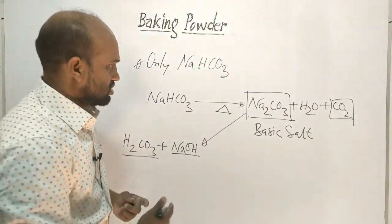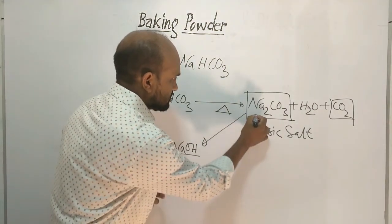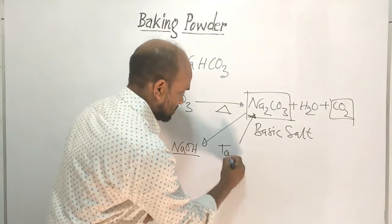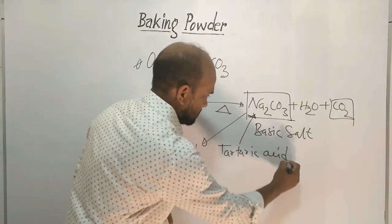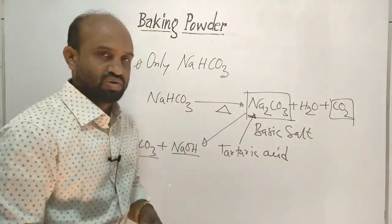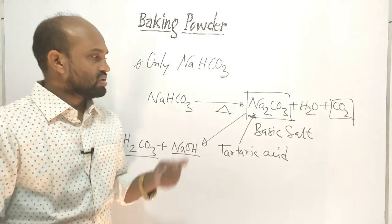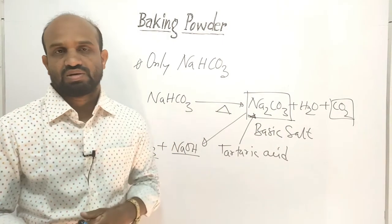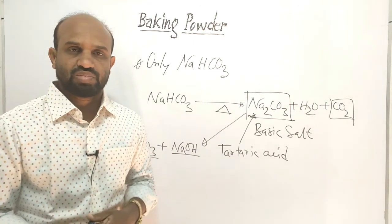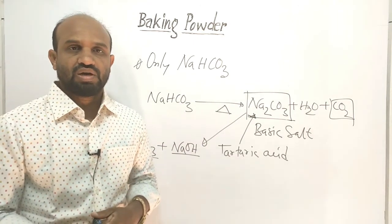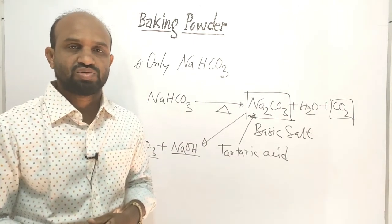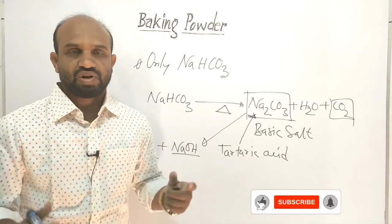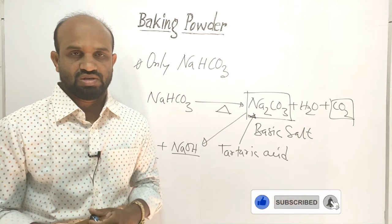So to neutralize this base, tartaric acid is used. Therefore, not only sodium bicarbonate is used, but a mixture of sodium bicarbonate and tartaric acid is used to make breads and cakes — to make them fluffy and spongy.